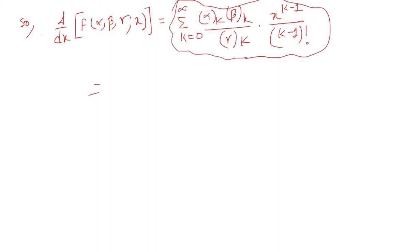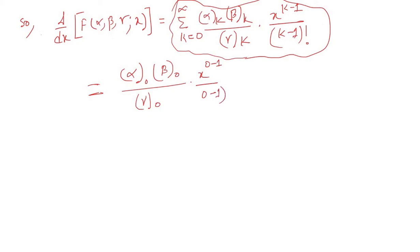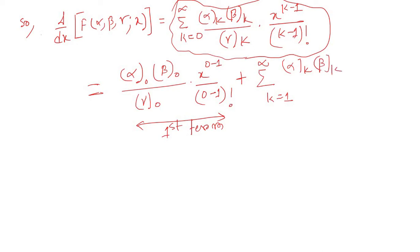This series can also be written by separating the first term: the k equal to 0 term gives (α)_0 (β)_0 over (γ)_0 times x to the power (0 minus 1) over (0 minus 1) factorial, plus summation k equal to 1 to infinity of (α)_k (β)_k over (γ)_k times x to the power (k minus 1) over (k minus 1) factorial.